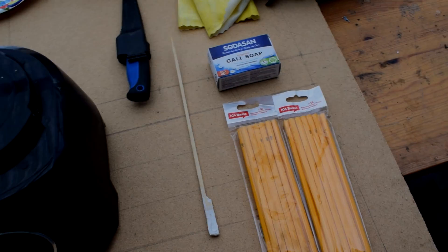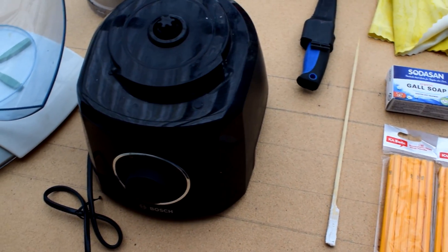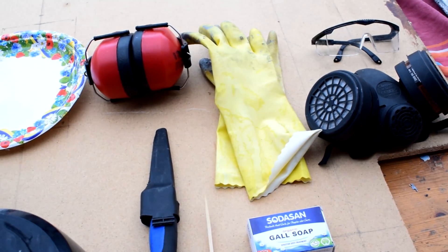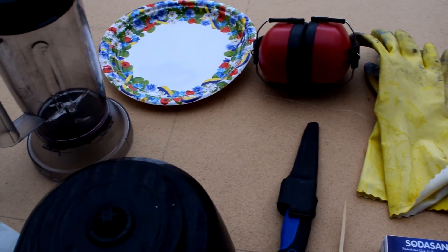So to make graphene at home, you will need graphite pencils, gall soap, a stick, a knife, a blender, a scale, a respirator, glasses, ear protection, gloves, and a paper plate.